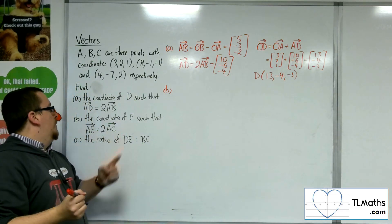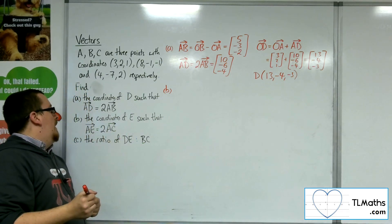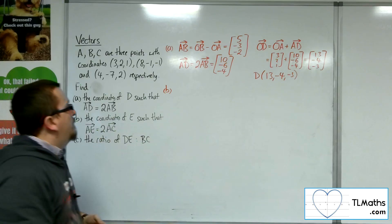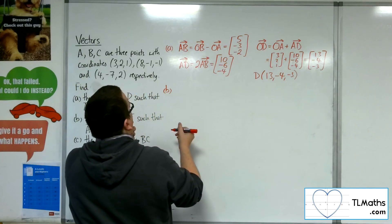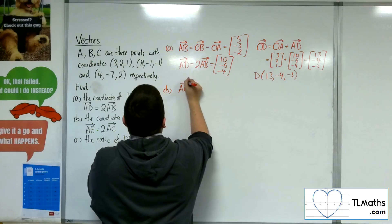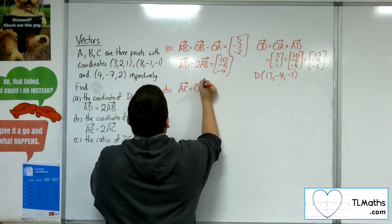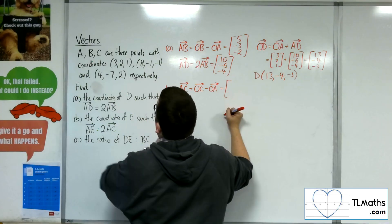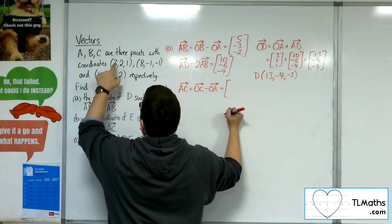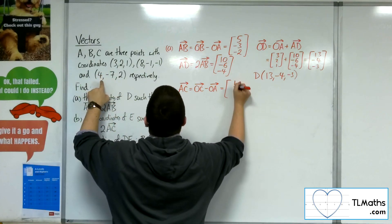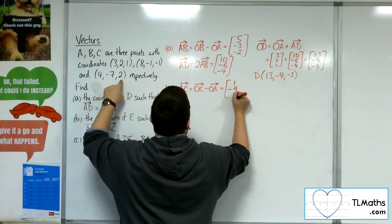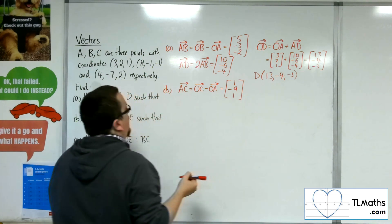Now we're also told the coordinates of E, to find the coordinates of E such that AE is 2 lots of AC. Okay, so AC is OC minus OA. So 4 take away 3 is 1, minus 7 take away 2 is minus 9, 2 take away 1 is 1. So there's AC.